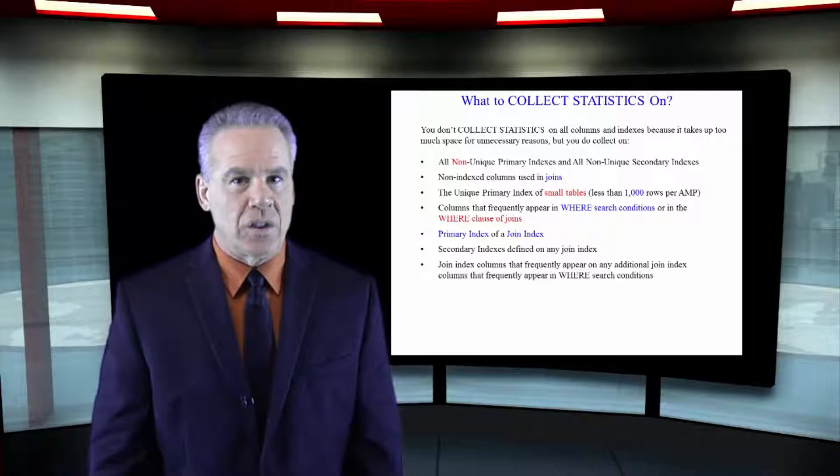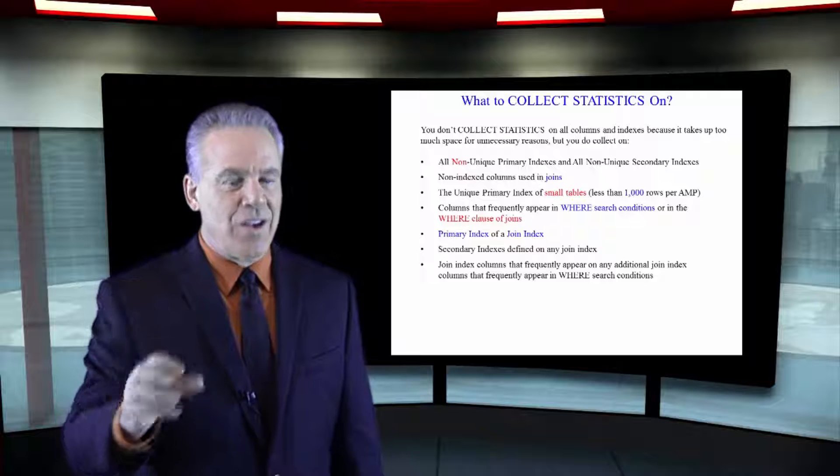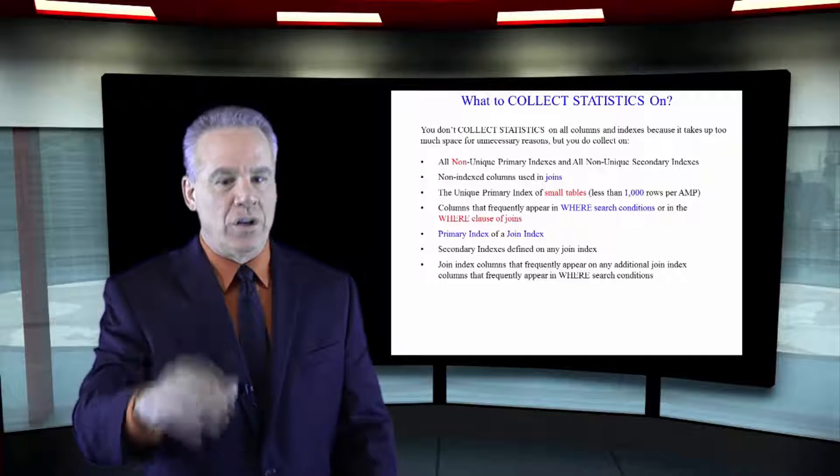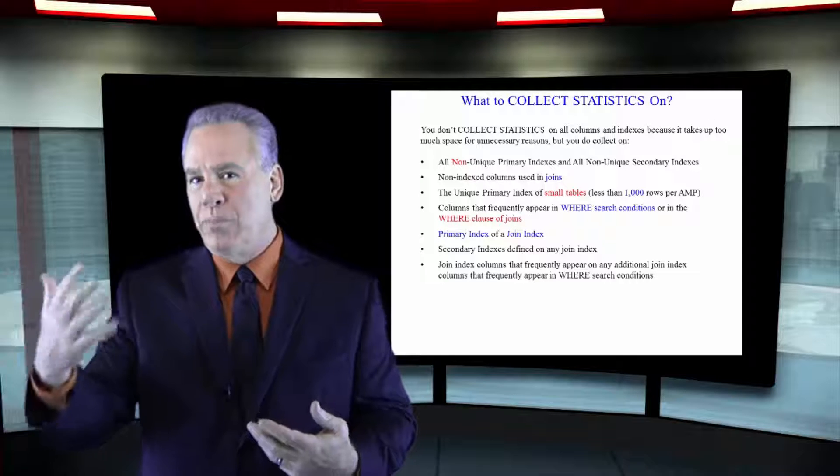The most important things. Non-unique primary and secondary indexes so that the optimizer really can take advantage of when to do those or sometimes it will consider a full table scan instead. Needs to know statistical information.